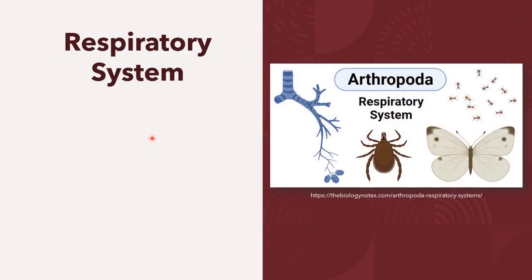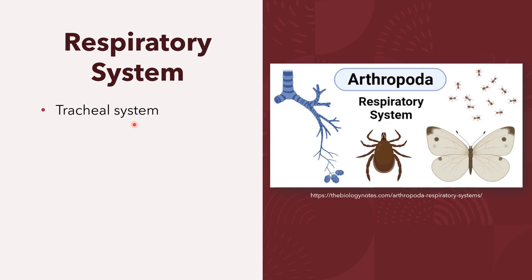For the respiratory system, arthropods are the largest phylum with the highest number of species and individuals. Arthropods have various types of respiratory systems. Among these are the tracheal system, the book lungs, the blood gills, and the gills.